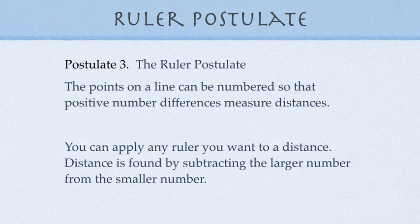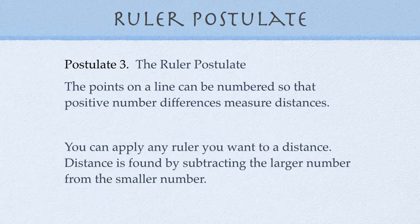So, postulate three is the ruler postulate. And it basically is saying you can apply any ruler you want to a distance. Pick an appropriate ruler. If your distances are large, like the size of a field, then the ruler might be in meters or yards. If it's very large, it might be in miles. If it's astronomical distances, then you might choose astronomical units or light years. But you'll find distance by subtracting a larger coordinate from a smaller coordinate.